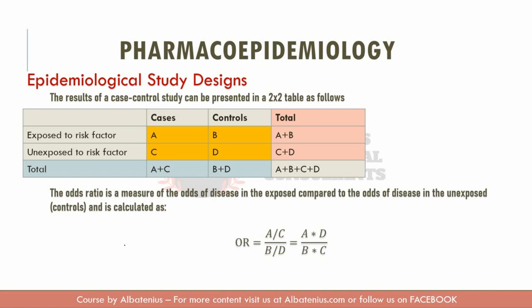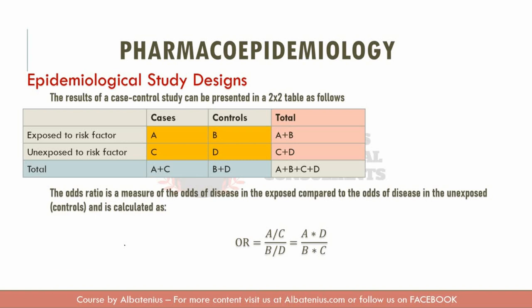As part of a case control study, the cases and controls should have very specific definitions — for example, the time period for the condition to develop, diagnostic criteria, population of interest, and other potential contributing factors. Once cases are identified, controls from a similar population with similar chances of developing the condition are chosen.